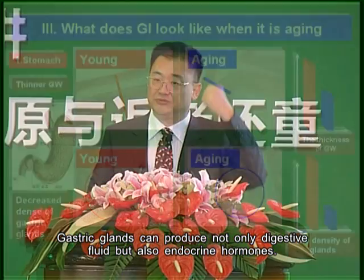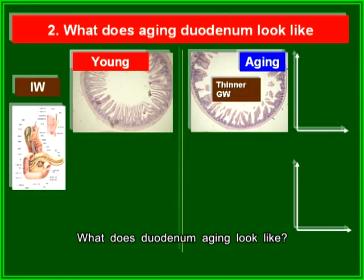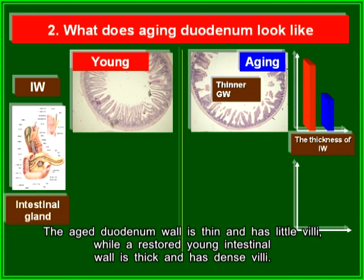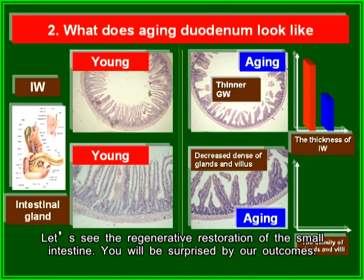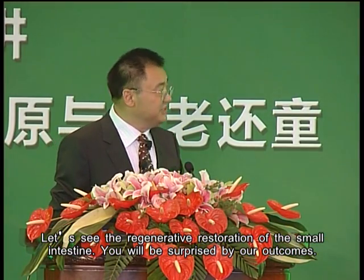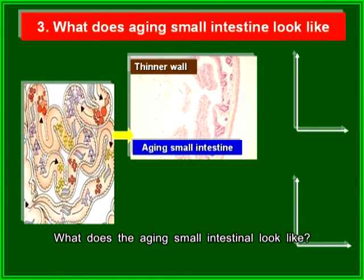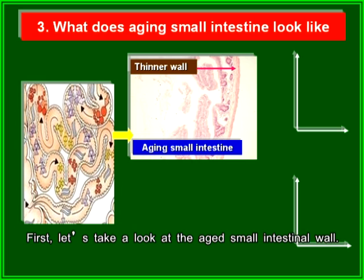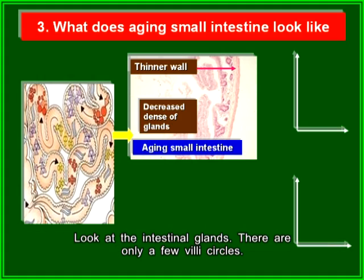Gastric glands can produce not only digestive fluids but also endocrine hormones. The aged duodenum wall is thin and has very little villi, while a restored young intestinal wall is thick and has dense villi. Looking at the aging small intestine, the wall is thin and you can see a paralyzed part like a tiny crack, with only a few villi circles in the intestinal glands.